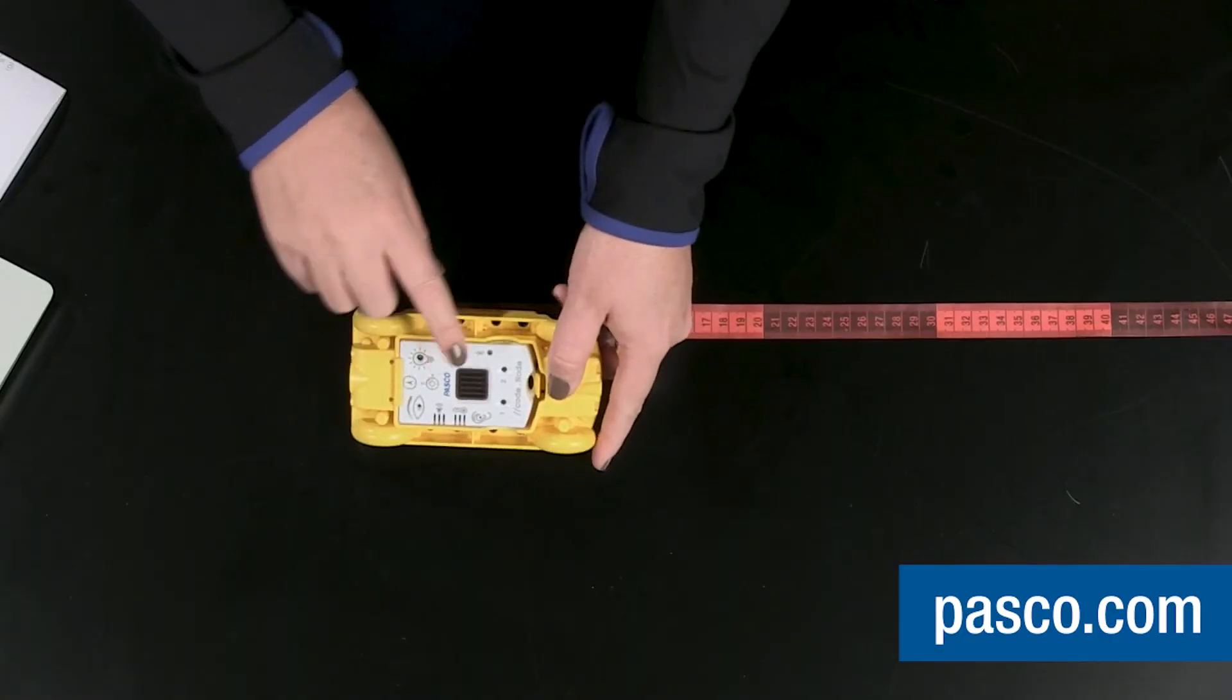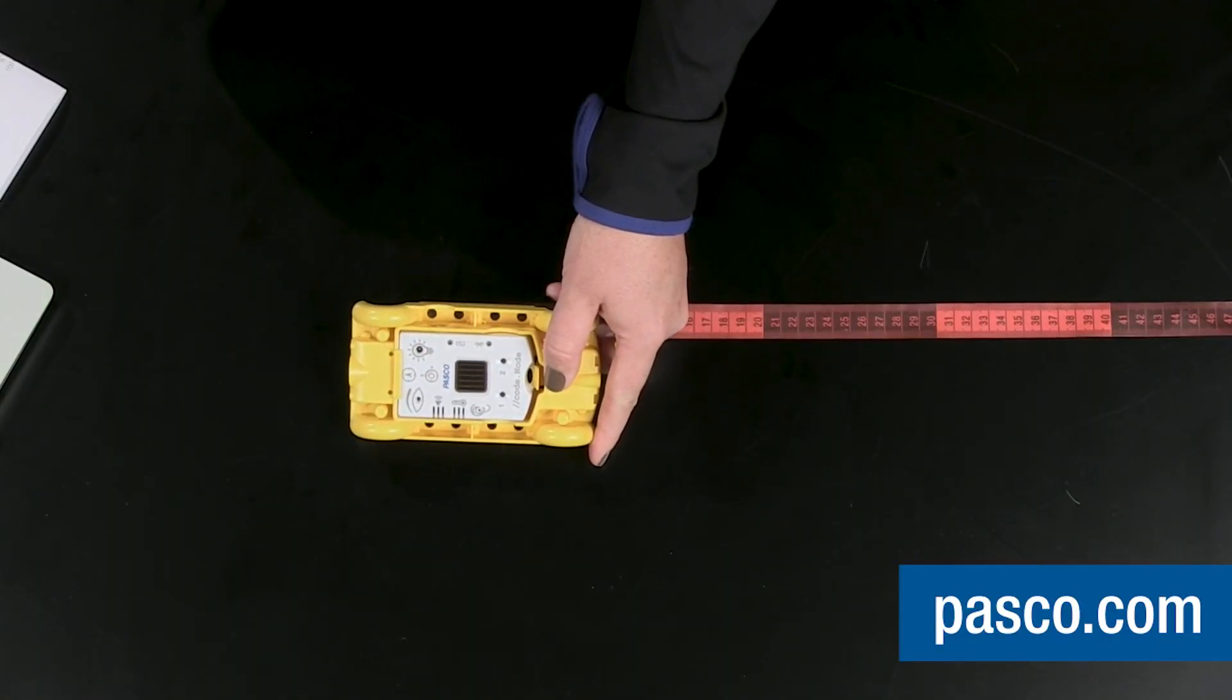You can access the student and teacher versions of this activity in our teacher resource center at pasco.com. You can always challenge students to extend their coding programs, such as not only showing how many rotations the wheel completed in a numerical output on the SparkView screen, but also showing the number on the 5x5 LED array itself. Thanks so much for watching and don't be afraid to let your students come up with other activities that use the CodeNodeCart.